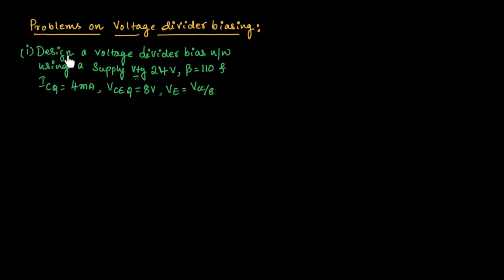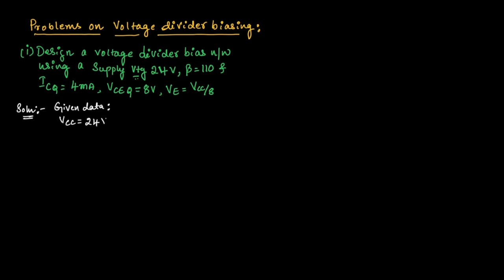Let us consider the first problem where we need to design a voltage divider bias network using a supply voltage of 24 volts, beta is given as 110, and ICQ value is 4 milliampere. VCEQ at Q point is 8 volts and VE is equal to VCC divided by 8. In this problem, they have asked us to design a voltage divider bias network, which means once you solve the problem, you need to draw the circuit and substitute all the values you have calculated. The given data is: VCC = 24 volts, beta = 110, ICQ = 4 milliampere, VCEQ = 8 volts, and VE = VCC/8.